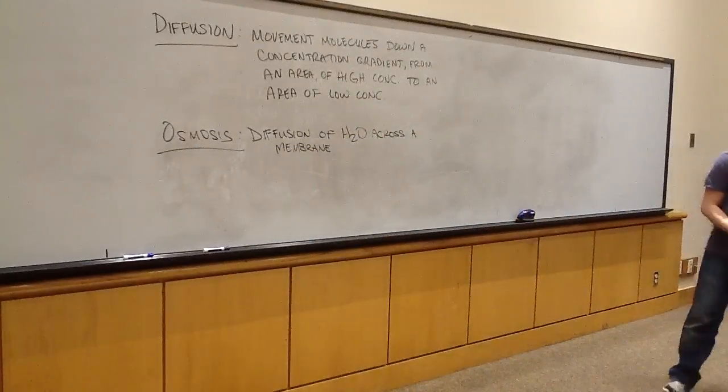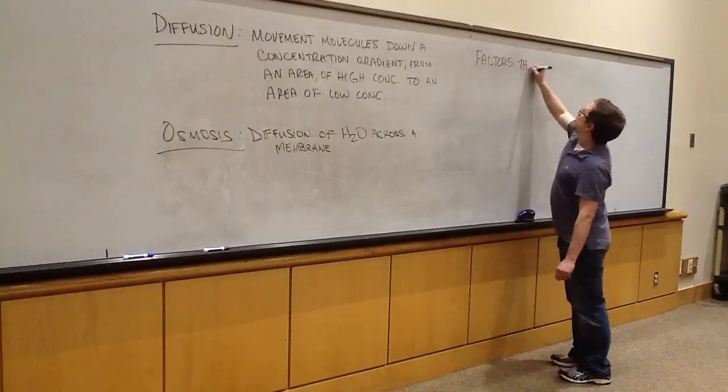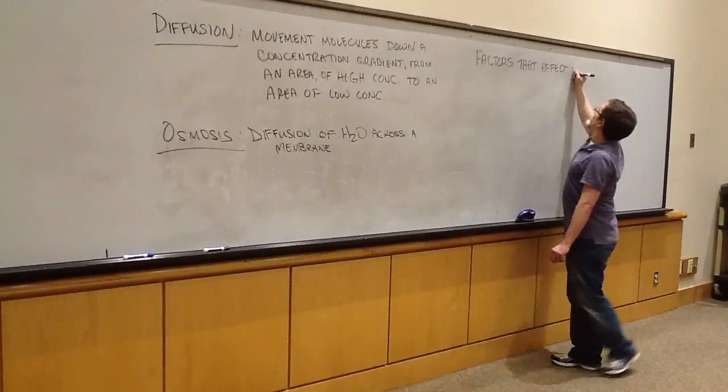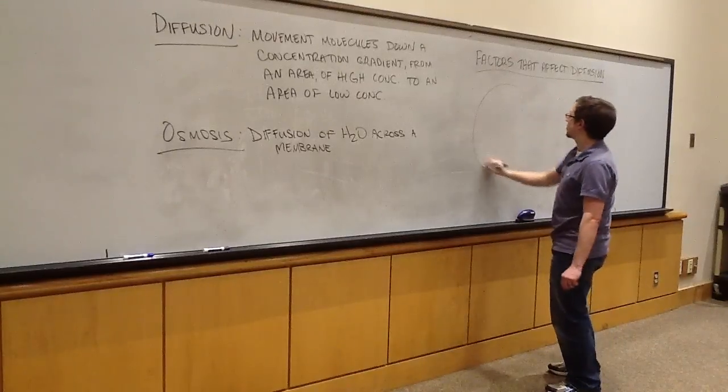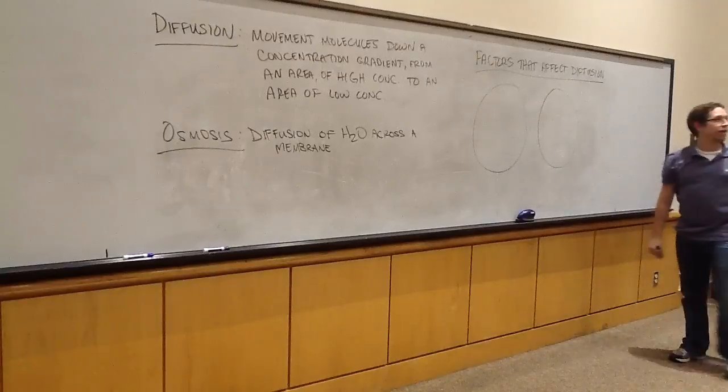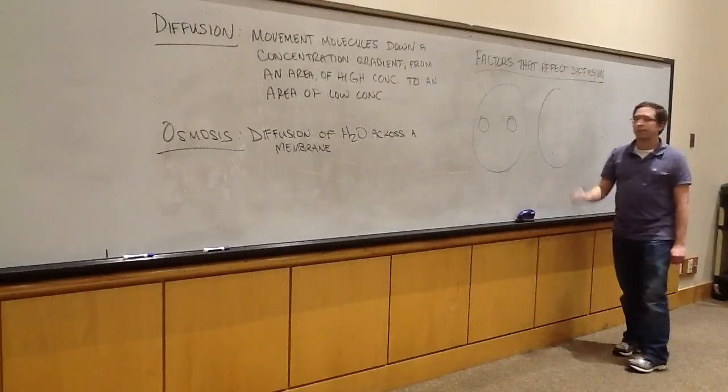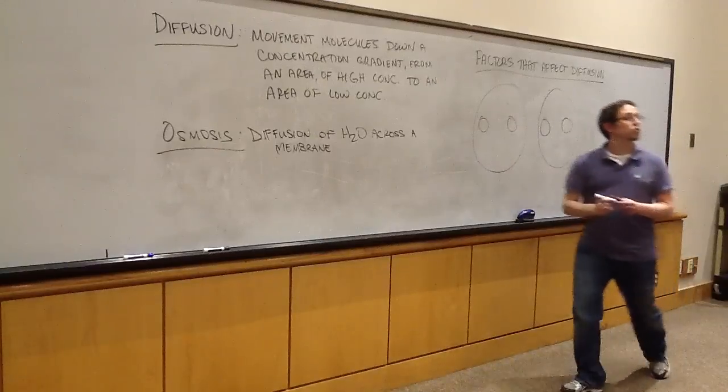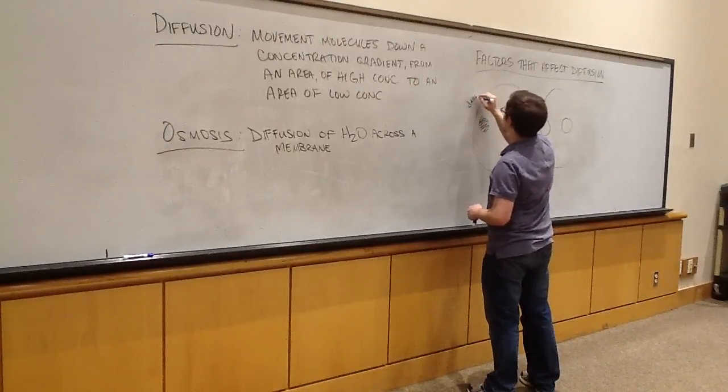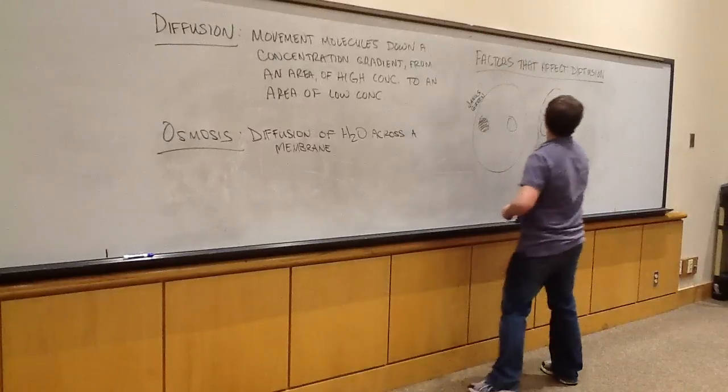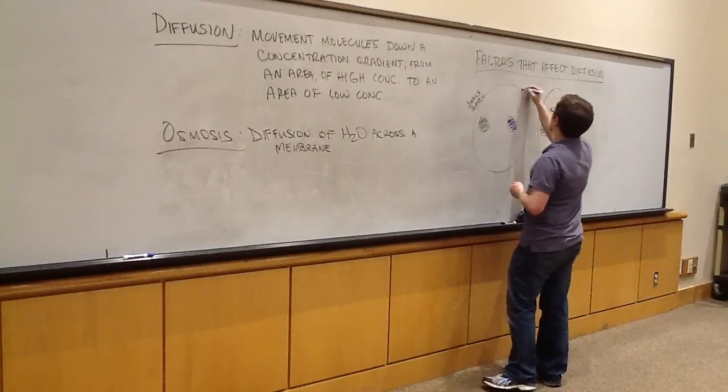The first experiment in this lab aimed to identify factors that affect diffusion. Specifically, the two factors we looked at were temperature and molecular weight or size. For this experiment, your instructor may have cut out some holes in these agar plates and placed two different substances inside. One was Janus green, which I'll denote as black, and the other was potassium permanganate, which is purple.